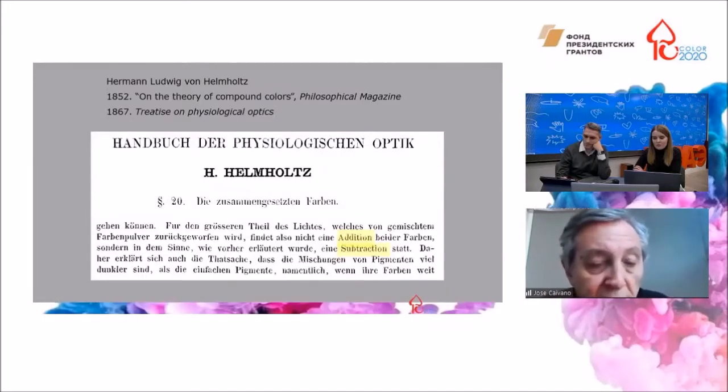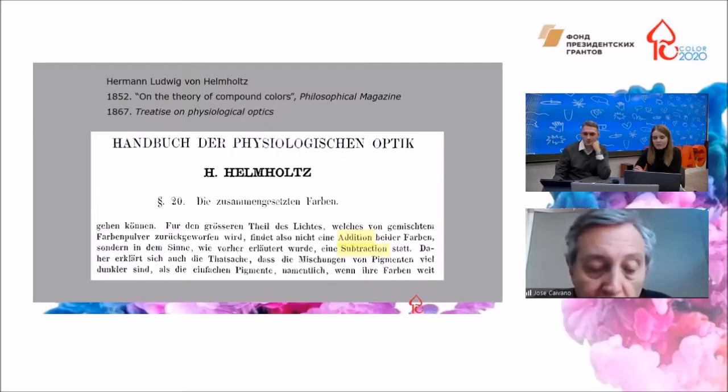In 1852, Helmholtz described his experiments on mixing colors by using lights or pigments, emphasizing the different results in both cases. This will be further developed in his studies on physiological optics, where Helmholtz already uses the words addition and subtraction to differentiate the processes.